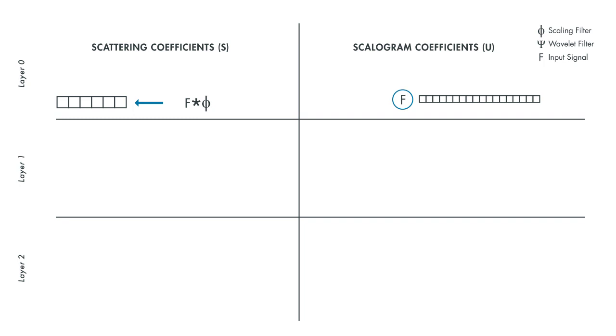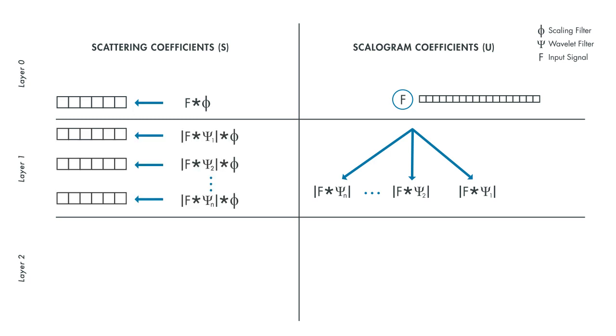The details lost in the first step are captured at the subsequent layer by performing a continuous wavelet transform of the signal to yield a set of scalogram coefficients. A nonlinear operator, in this case a modulus, is applied on the scalogram coefficients, and then the output is filtered with the wavelet low-pass filter, yielding a set of layer 1 scattering coefficients.